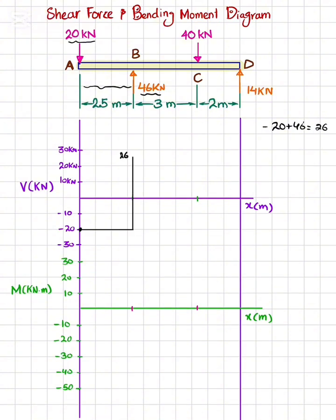Moving from point B to C there is no other load so it will remain the same horizontal till point C. At point C you have a minus 40 kN load. So plus 26 minus 40 will give you minus 14. So shear force will change from plus 26 to minus 14.